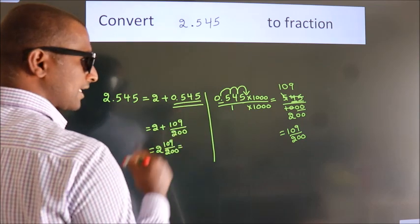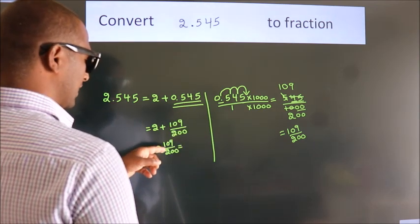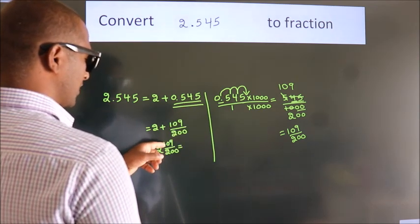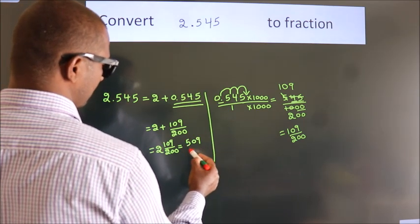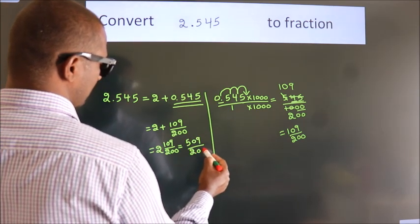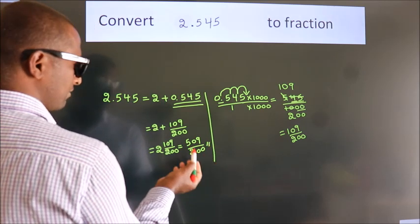And in improper fraction it is 2 into 200, 400 plus 109, 509 by 200 is our fraction.